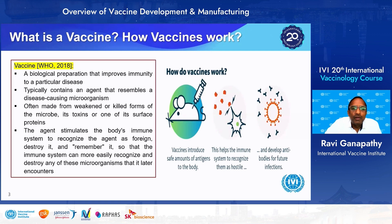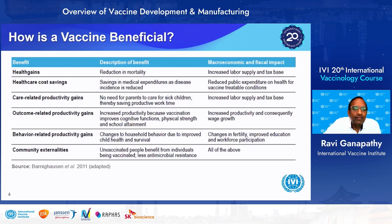Vaccines generally introduce safe amounts of antigens into the body as preparation to produce an immune response when it is again exposed to the same organism in the future. Vaccines are beneficial in several ways: through health gains, healthcare cost savings, care-related productivity gains, outcome-related productivity gains, behavior-related productivity gains, and community externalities. Even people who are unvaccinated can benefit due to the herd immunity concept.